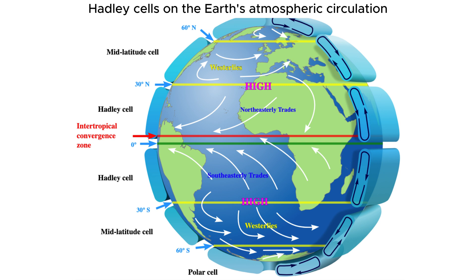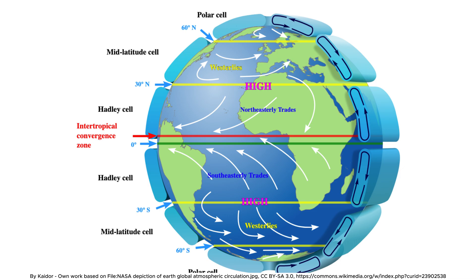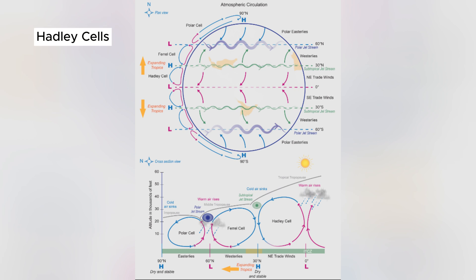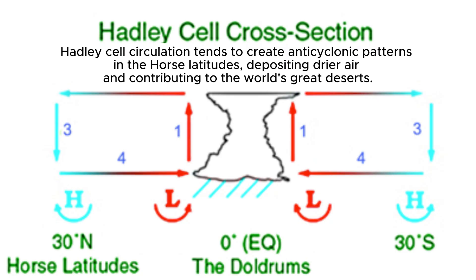Their lack of rainfall is largely due to the Hadley cell circulation, a global wind pattern that transports air away from the equator towards these latitudes. At the equator, warm, moist air rises and cools, leading to heavy rains.